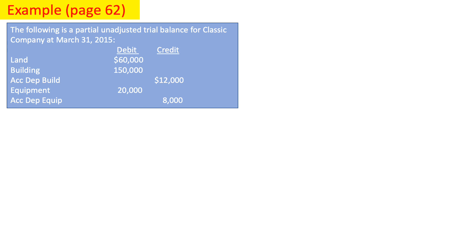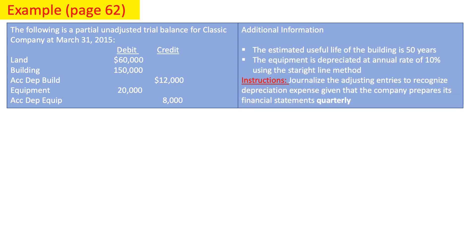Let's take another example. The following is a partial unadjusted trial balance for Classic Company at March 31, 2015. We have land, building, accumulated depreciation for building, equipment, and accumulated depreciation for equipment. Additional information: the estimated useful life of the building is 50 years; the equipment is depreciated at an annual rate of 10% using the straight-line method. We must journalize adjusting entries given that the company prepares its financial statements quarterly — every three months.